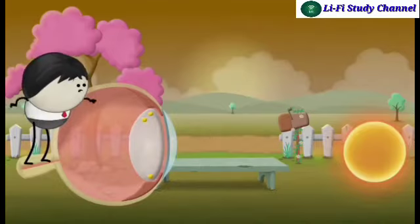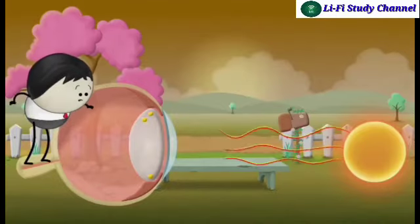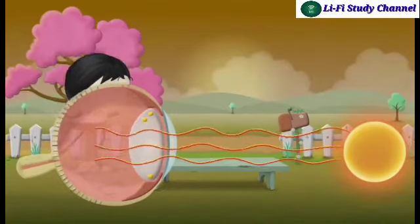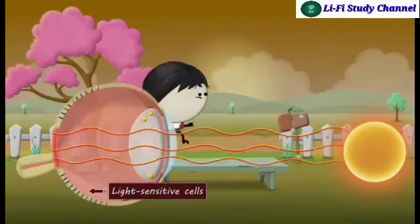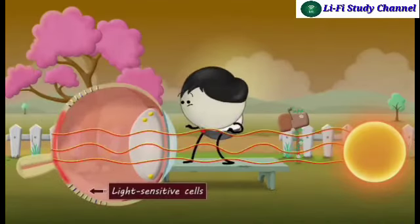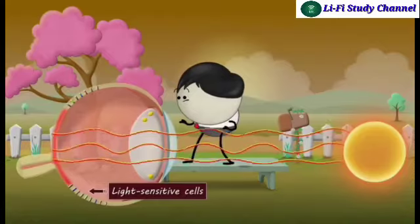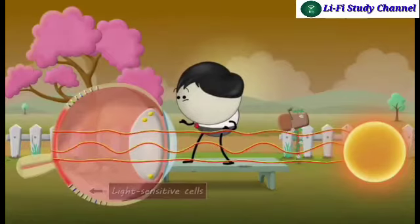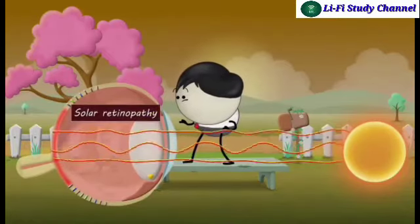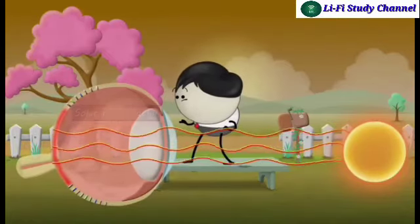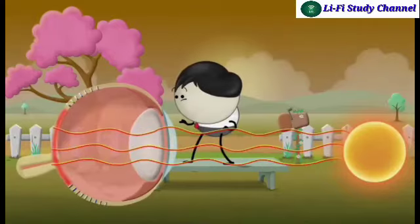Ultraviolet radiation in the retina damages light-sensitive cells, affecting the blood vessels from which we can see. This condition is called solar retinopathy. Solar retinopathy can cause permanent blindness.